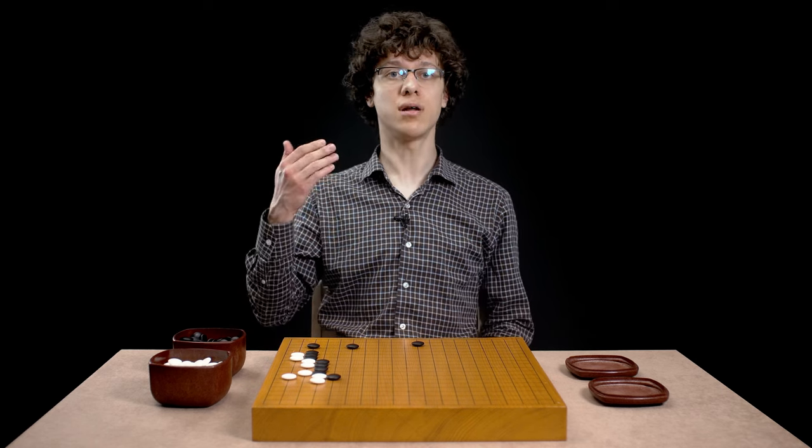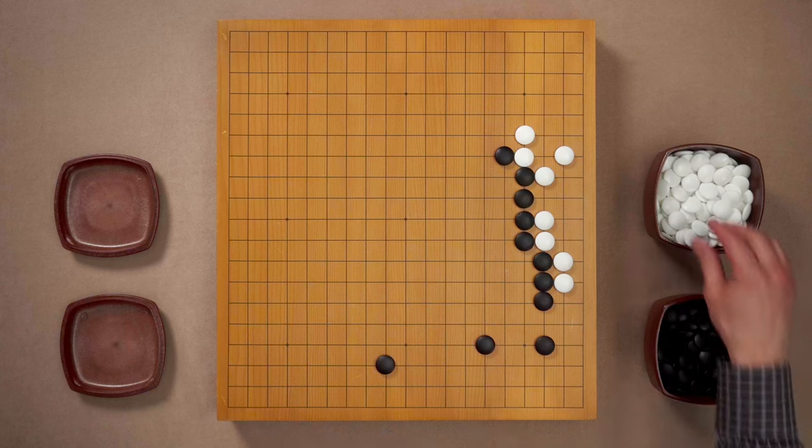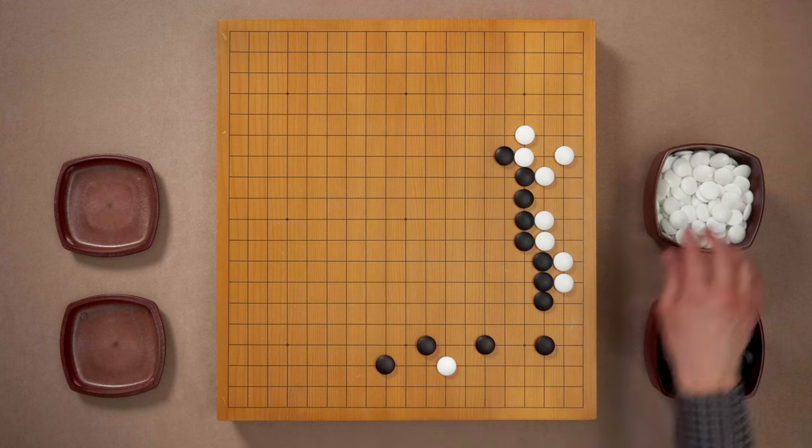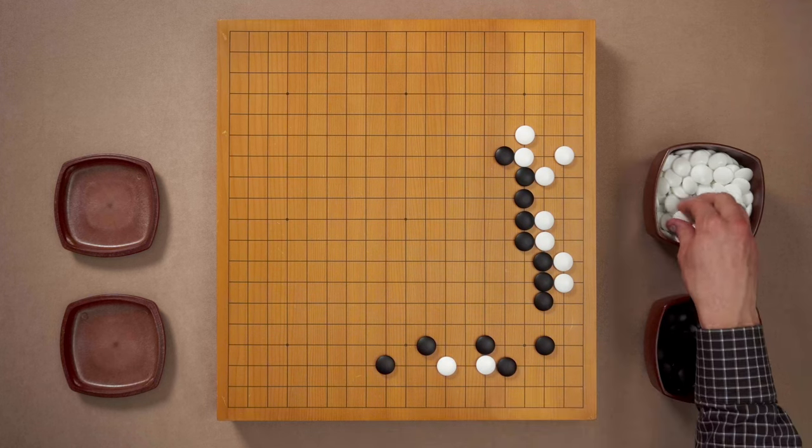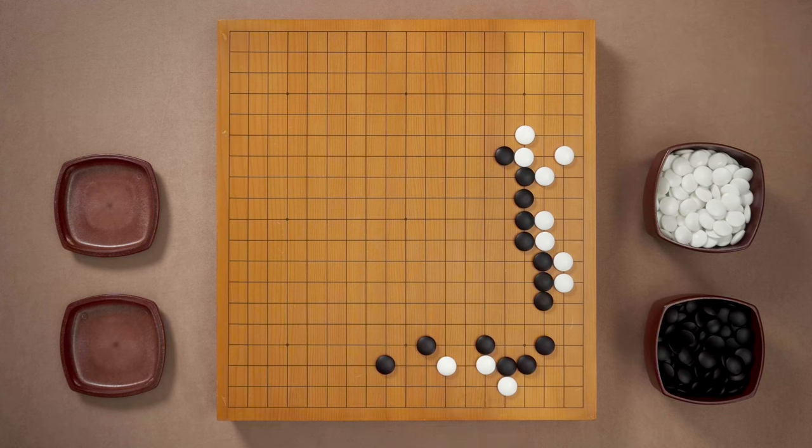Look at this situation that appeared in one of my games in the Polish Championship. Black has a big moyo, so white invades. Black tries to surround white and white is making a base. At this moment, perhaps white could try to make two eyes on the side, but white has a better option.